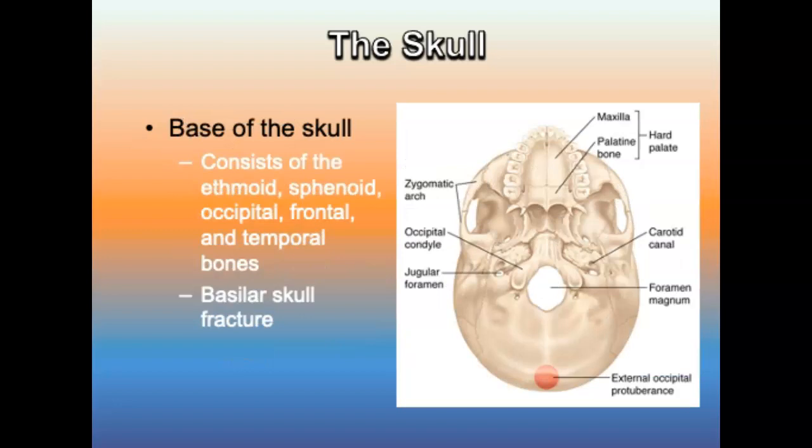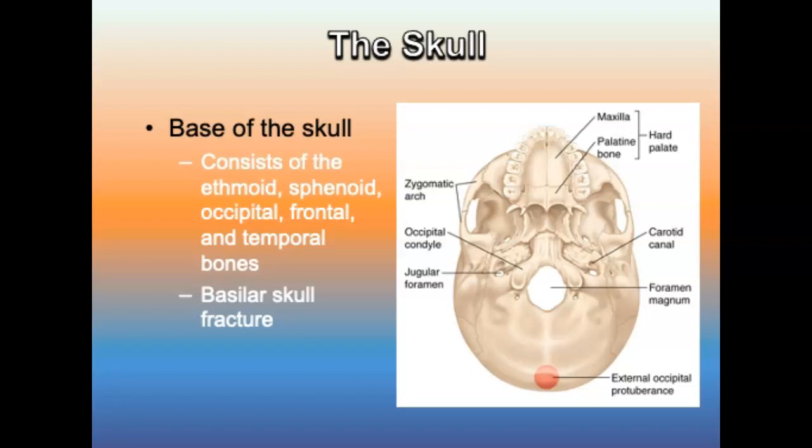The base of the skull consists of parts of the ethmoid, sphenoid, occipital, frontal, and temporal bones. In a basilar skull fracture, the temporal bone can be involved. It is revealed in the field by drainage of cerebrospinal fluid from the nose or ears. The most common location of drainage is the nose, which indicates a fracture of the ethmoid or temporal bone.